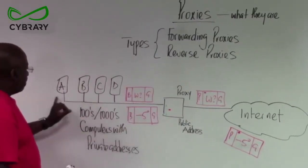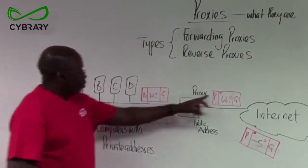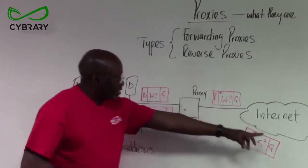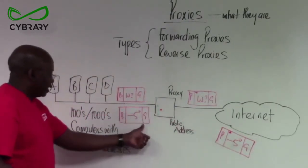By doing address translation, packets on the internal network with private addresses are processed by the proxy, sent across the internet, received, processed by the proxy, and pushed to the internal network.